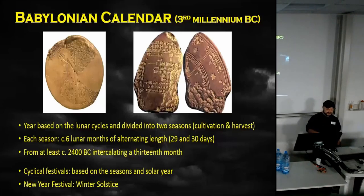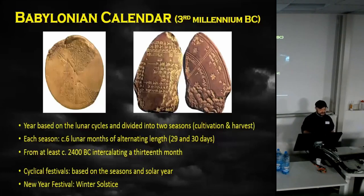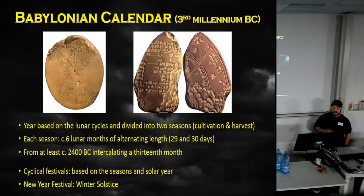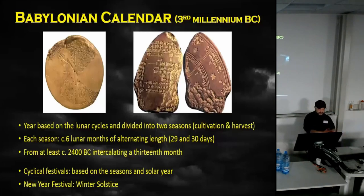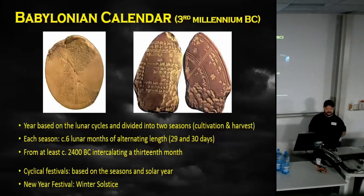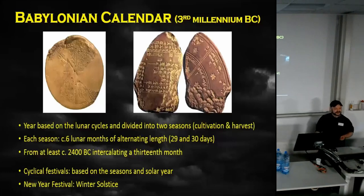The Babylonian calendar is the one we have the most information on. In the earliest period it was based on lunar cycles divided into two seasons — cultivation and harvest — each six lunar months of alternating length. From at least 2,400 BC they were adding a 13th month every few years to reconcile lunar and solar differences. Cyclical festivals were based on seasonal change, with the new year festival at the winter solstice.